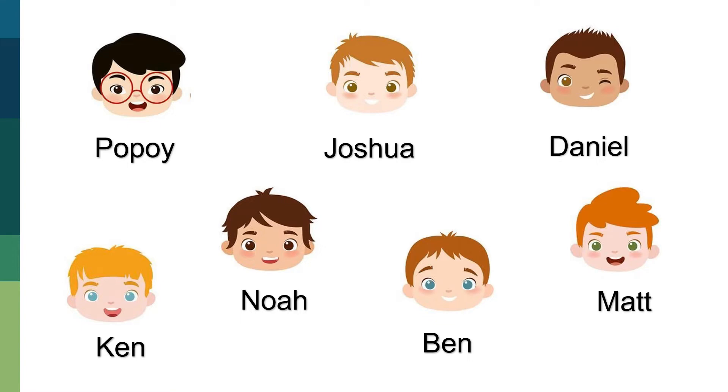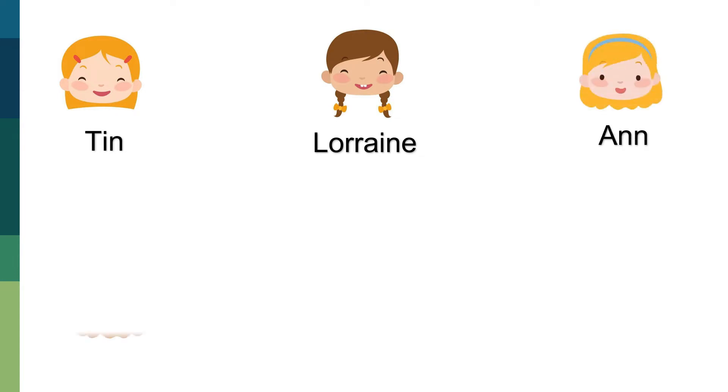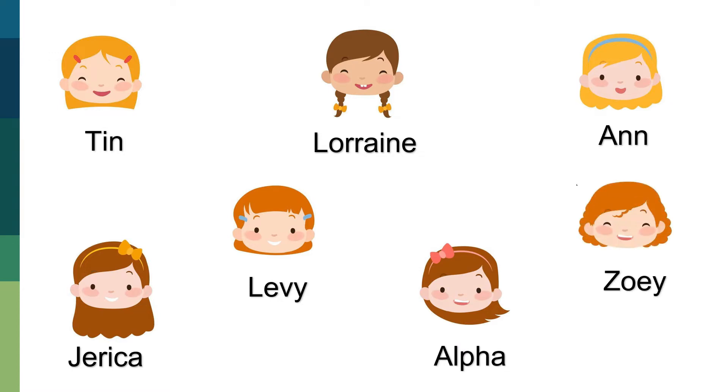Fortunately, there were also seven beautiful girls in their school who haven't found their partners yet. The seven girls are Tin, Lorraine, Ann, Jerika, Levi, Alpha, and Zoe.